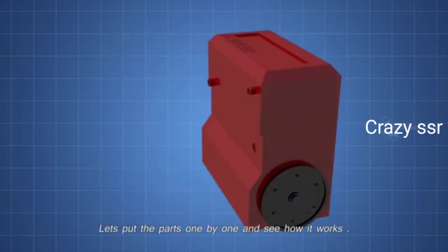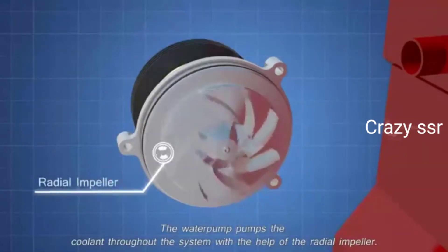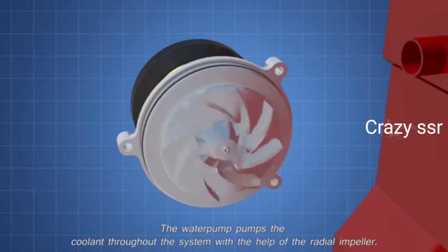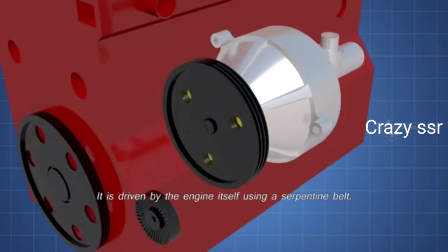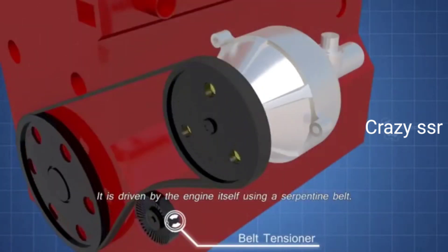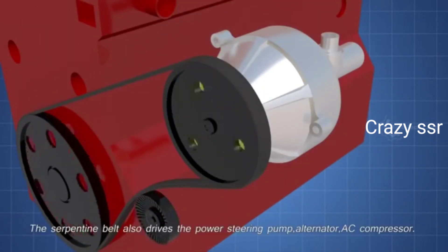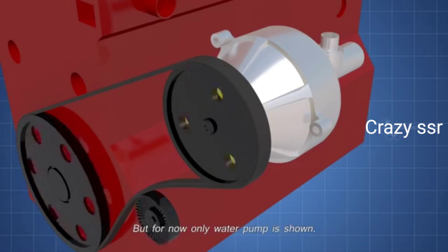Let's put the parts one by one and see how it works. The water pump pumps the coolant throughout the system with the help of the radial impeller. It is driven by the engine itself using a serpentine belt. The serpentine belt also drives the power steering pump, alternator, AC compressor. But for now only water pump is shown.